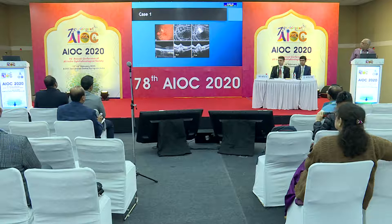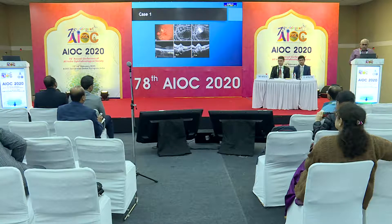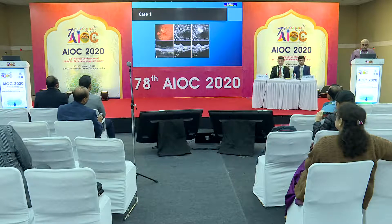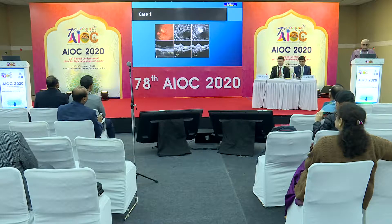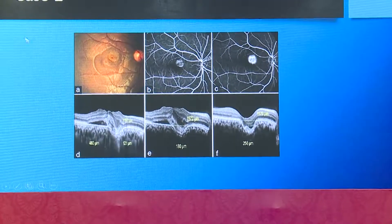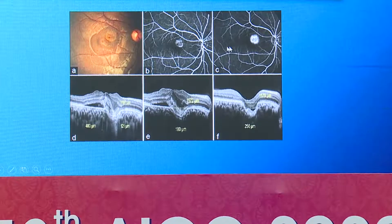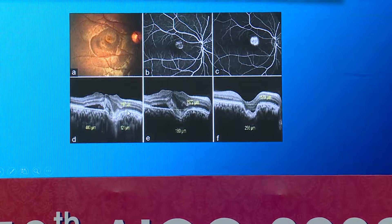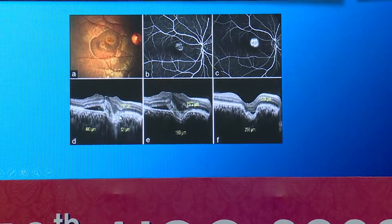Case one shows a classic choroidal neovascular membrane. Here is the focal choroidal excavation, which was present initially. This is before treatment and this is after treatment, where subretinal fluid has gone. So this is a case where CNVM has developed at the site of focal choroidal excavation. Case two shows another classic leaky pattern in the early phase with a foveal margin on angiogram. Here also, you can see focal choroidal excavation with subretinal fluid. This is before treatment, and after treatment the fluid has gone.